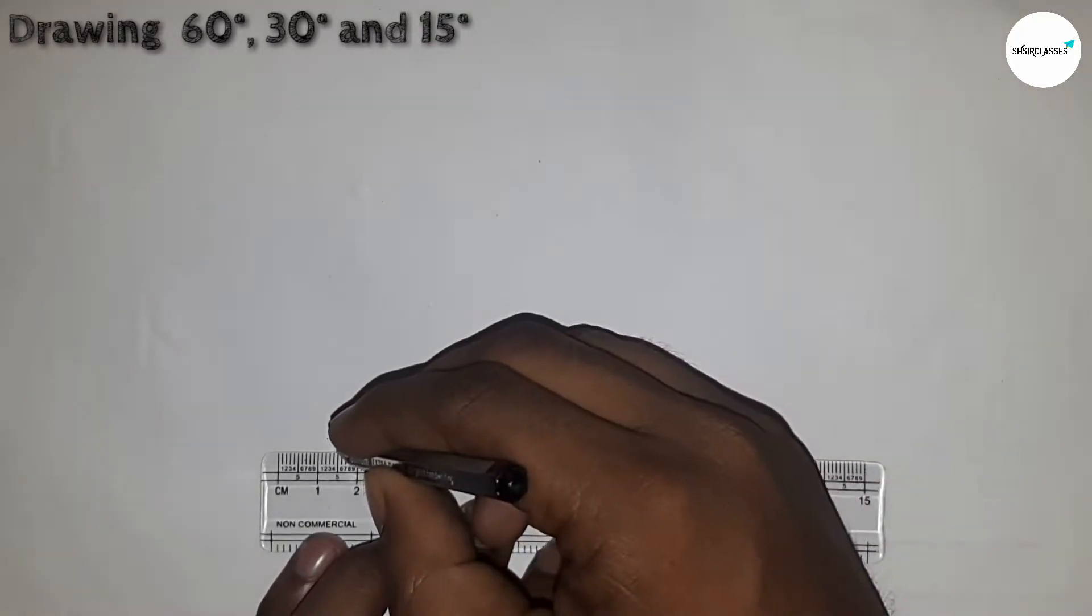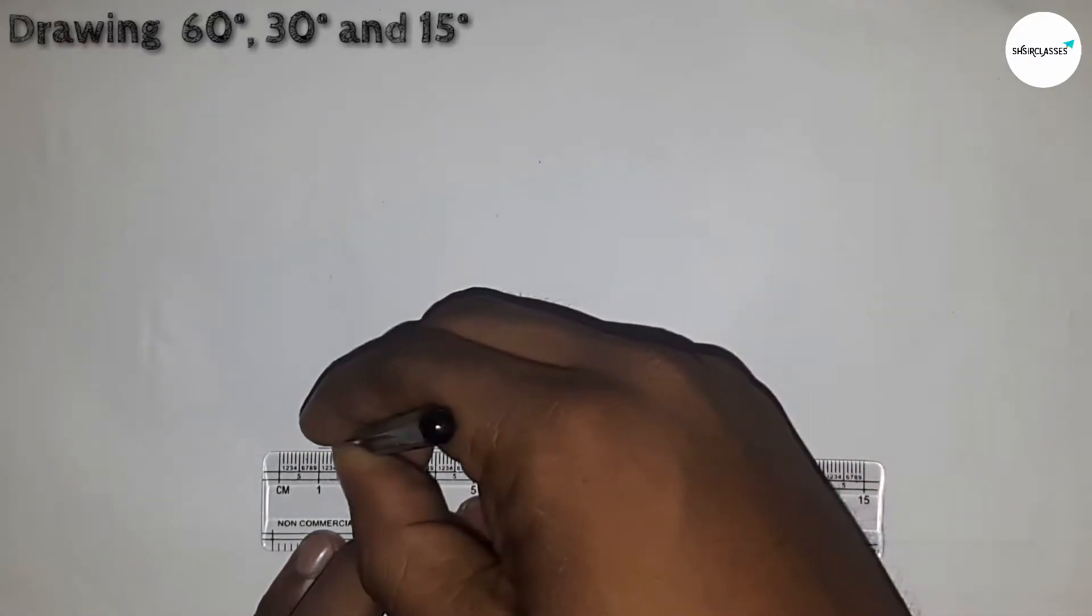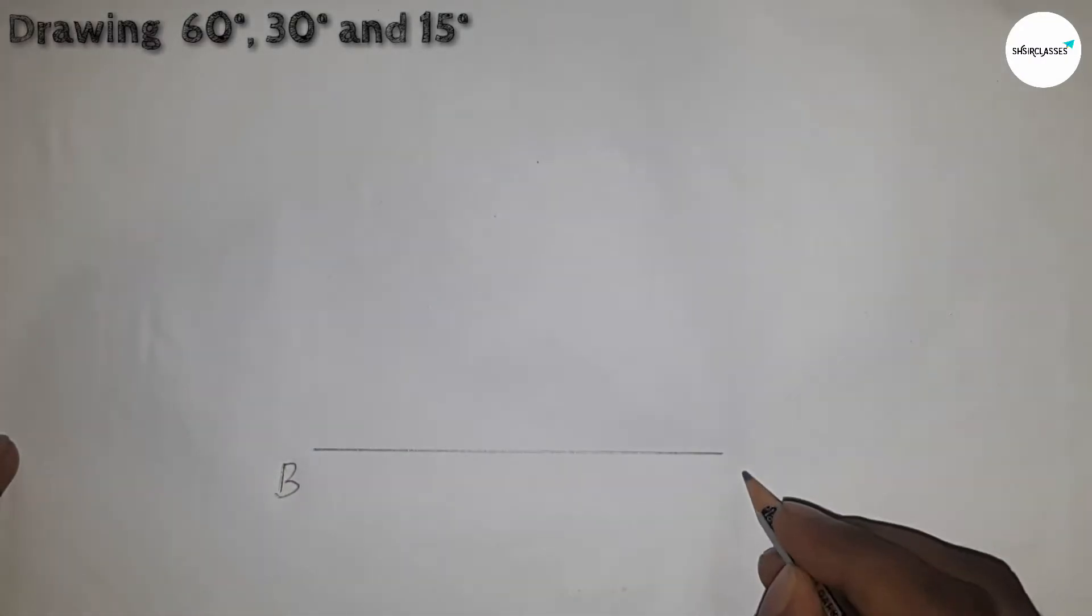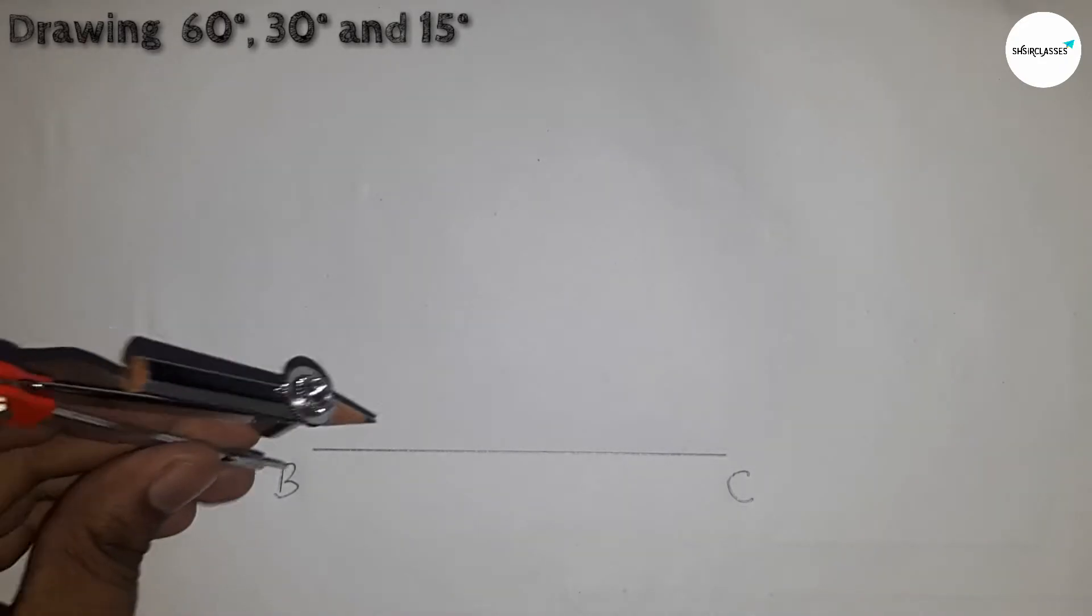First of all drawing a line BC. Next I am going to draw angle on the point B.